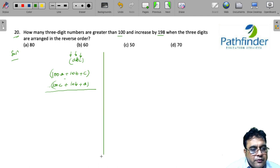Let us note it down here: 100c + 10b + a minus 100a minus 10b minus c will give you 198.